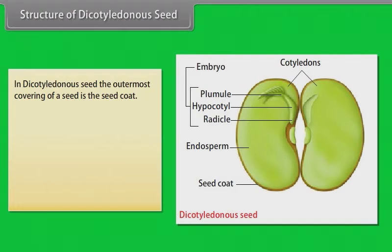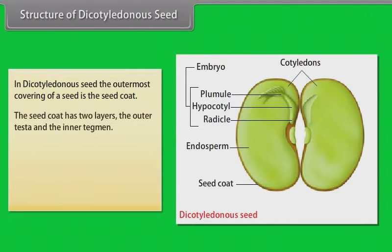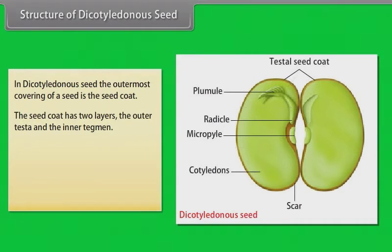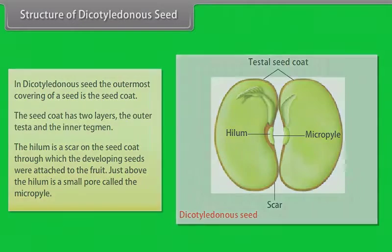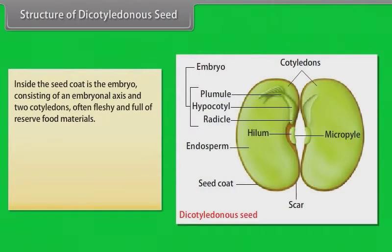In a dicotyledonous seed, the outermost covering is the seed coat. The seed coat has two layers: the outer testa and the inner tegmen. The hilum is a scar on the seed coat through which the developing seeds were attached to the fruit. Just above the hilum is a small pore called the micropyle. Inside the seed coat is the embryo, consisting of an embryonal axis and two cotyledons, often fleshy and full of reserved food materials.